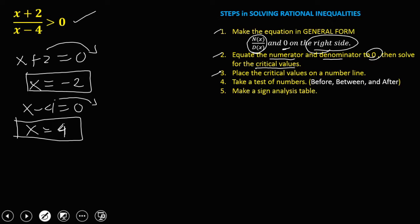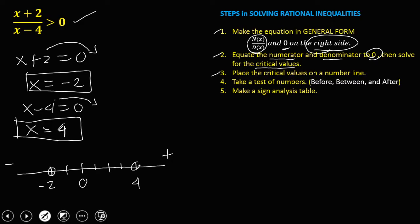Then place the critical values on a number line. We have this number line — zero in the center, negative on the left, positive on the right. So we place negative 2 and positive 4. Then take test numbers: before your first critical value, so before negative 2, we use negative 3.